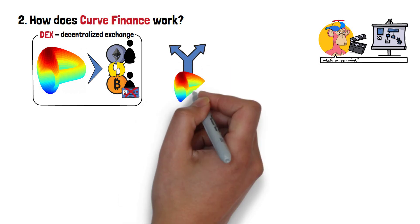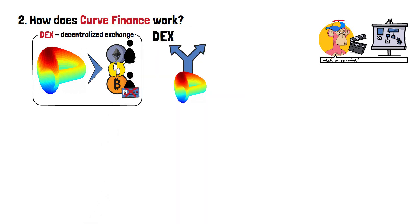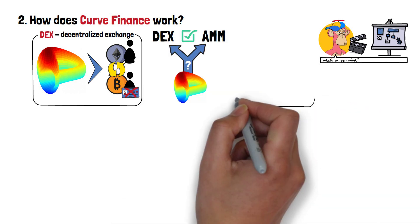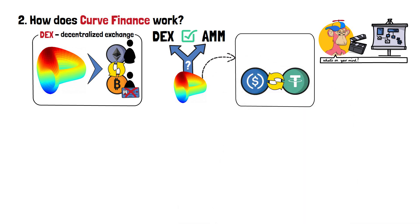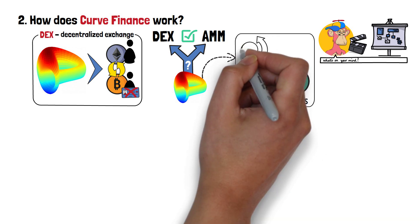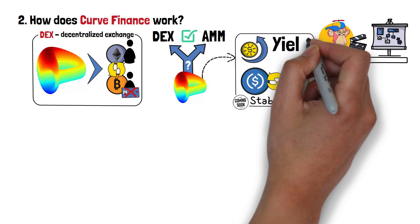Now, which is it then? Is Curve Finance a decentralized exchange, or an automated market maker? Well, it's both, actually. Curve Finance does allow you to come onto their website and swap different cryptocurrencies. Specifically, stablecoins. However, if trading stablecoins isn't your cup of tea, then you can use the alternative features of the platform, such as yield earning.